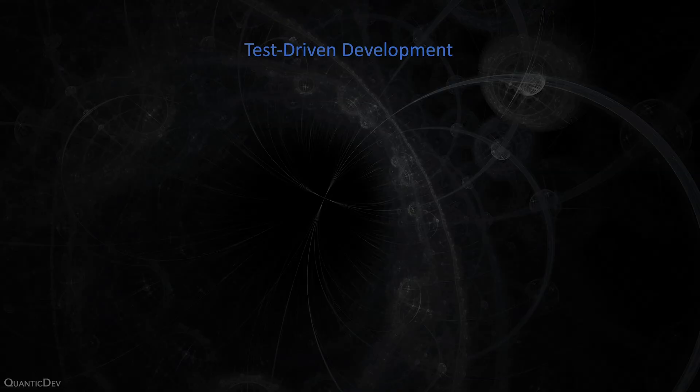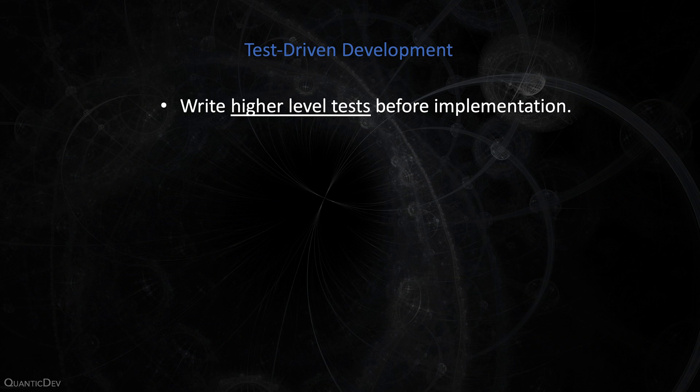9. Test-Driven Development. TDD is the simple principle of writing tests before you write code. After you gather your requirements and design what you want to do, you can start writing some very high-level test code to assert those requirements and design decisions. Step-by-step example: say you want to create a calculator program. You start by capturing requirements — your program can add or subtract.